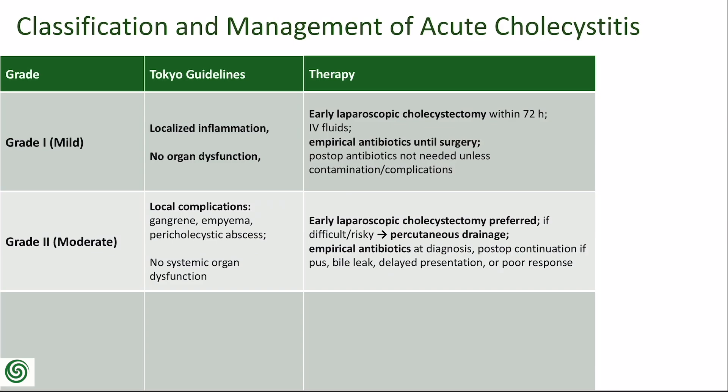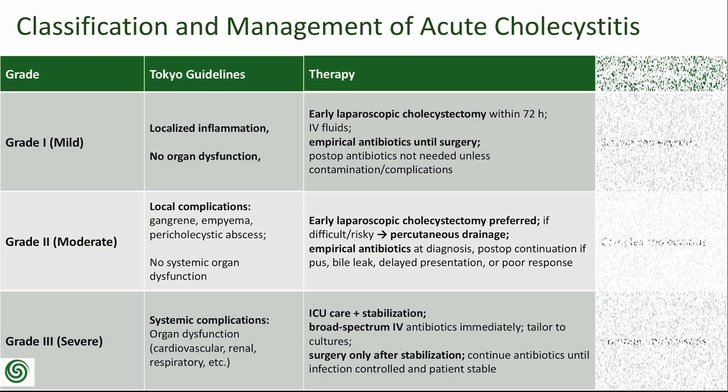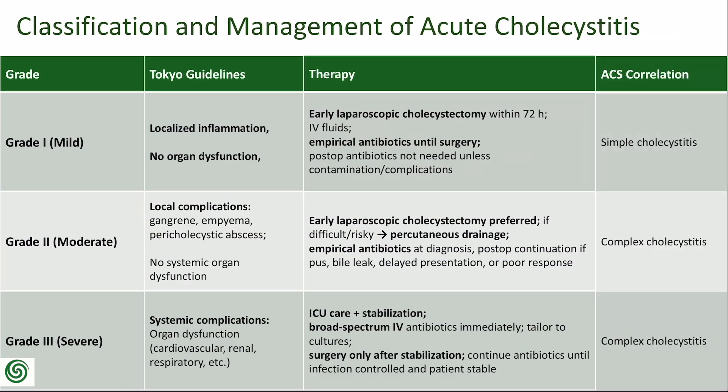However, if surgery is deemed too difficult or risky, percutaneous cholecystostomy drainage may be considered. Grade 3 (severe) includes cases with organ dysfunction — for instance, cardiovascular, renal, or respiratory compromise. These patients require ICU care and initial stabilization, and only then should surgical intervention be considered.